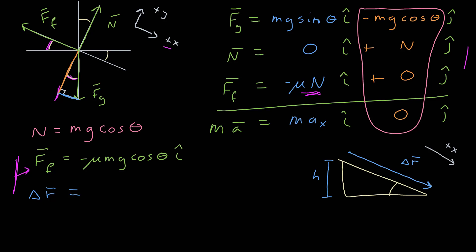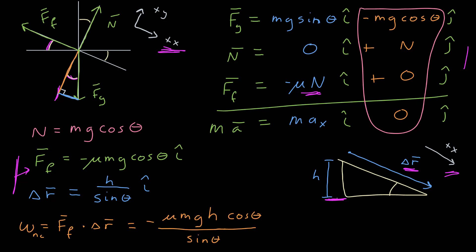Now I need the displacement vector. The motion is in a straight line and the frictional force is constant, so I can take the dot product of these two vectors to find the work done. The box slides down the incline, and the displacement vector points in the positive x direction. The magnitude is h over sine theta, since I was given the height h. I can now calculate the work done by non-conservative forces as the dot product of those two vectors — just the product of the two x components. This simplifies because sine theta over cosine theta is tangent theta, giving work equals negative mu times gh divided by tangent theta.